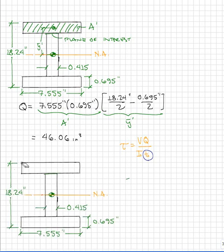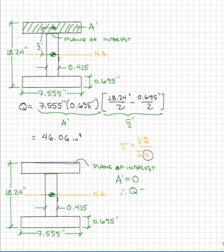Finally, let's consider a plane of interest located right along the top fiber of the beam. Notice that in this case, we have no outward area. Therefore, the first moment of the outward area must be zero, and subsequently our shear stress at that point must also be zero. So the shear stress is zero at the outermost fibers.